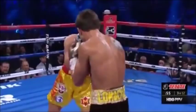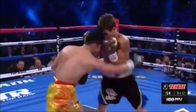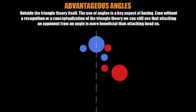Moving away from the triangle theory itself — those of us who actually watch boxing know that the use of angles is a key thing in boxing. Without the conceptualization of the triangle theory, we can still see that it's always beneficial to attack an opponent from an angle as opposed to coming head-on. This is something that is well understood.